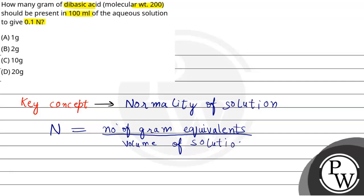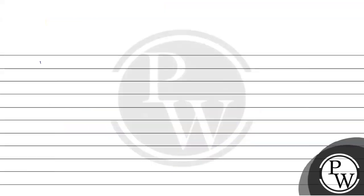Number of gram equivalents is simply equal to given mass — I'm writing it as w — divided by equivalent weight, which I'm writing as E. The volume of solution has to be in liters, but if it's in mL, then I need to multiply by 1000.